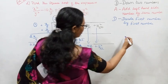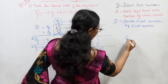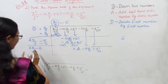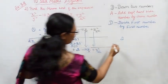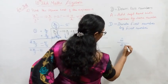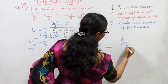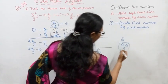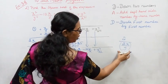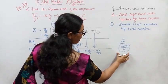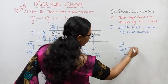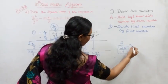The number is 2. First number by first number: 2 by 2 gives x by y.